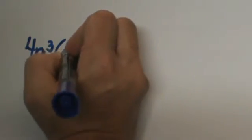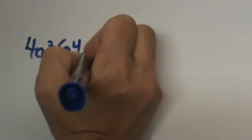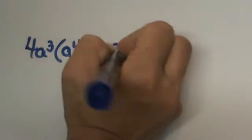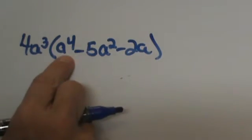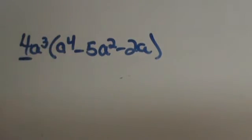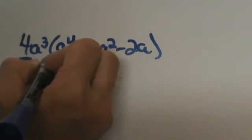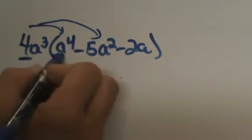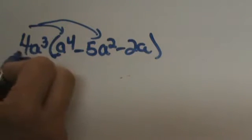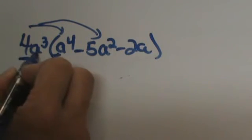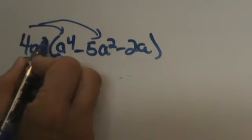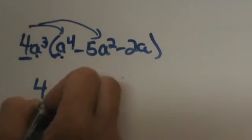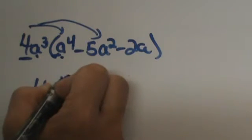We start with 4a cubed times the quantity a to the 4th minus 5a squared minus 2a. Let's distribute this in. When we distribute, we take the coefficient 4 times the coefficient in front of each term. The first term has a coefficient of 1, so 4 times 1 is 4, and a to the 3rd times a to the 4th — when multiplying like bases you add the exponents — gives a to the 7th.